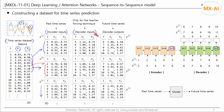Next, we generate subsets to be fed into the decoder. The first data point in each decoder input subset is the last data point in the encoder input, followed by the next four sequences. Finally, we generate the decoder output subsets from the five sequences immediately following each encoder input subset. These are all three-dimensional data: the first dimension is the batch size (number of subsets), the next is the number of time steps, and the last is the number of features.